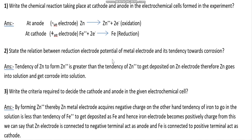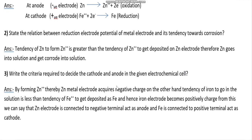Question number two: state the relation between reduction electrode potential of a metal electrode and its tendency towards corrosion. The tendency of zinc to form Zn²⁺ is greater than the tendency of Zn²⁺ to get deposited on the zinc electrode; therefore zinc goes into the solution and gets corroded.